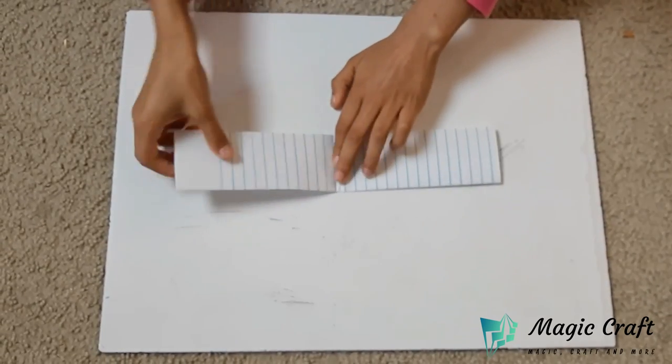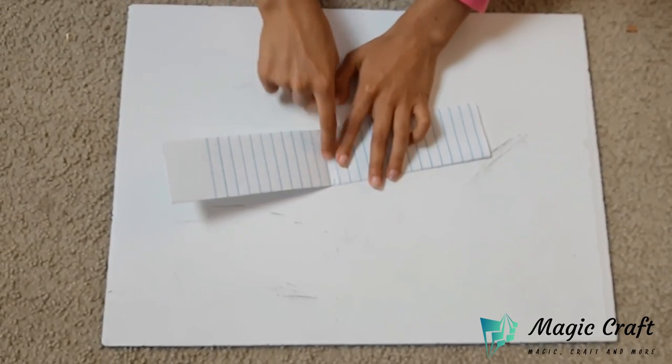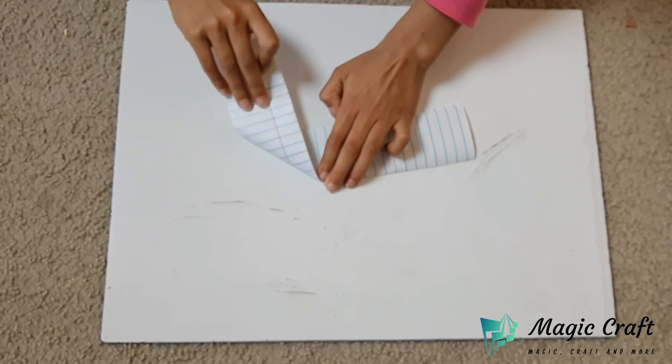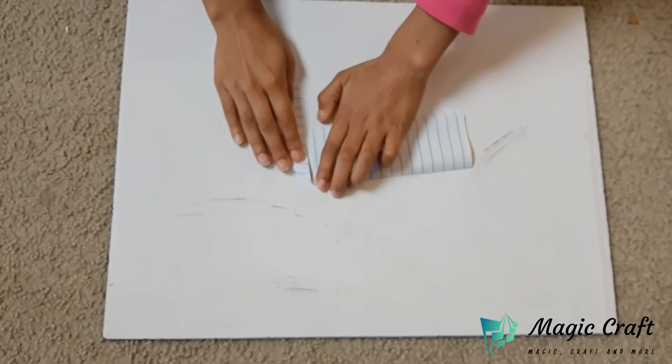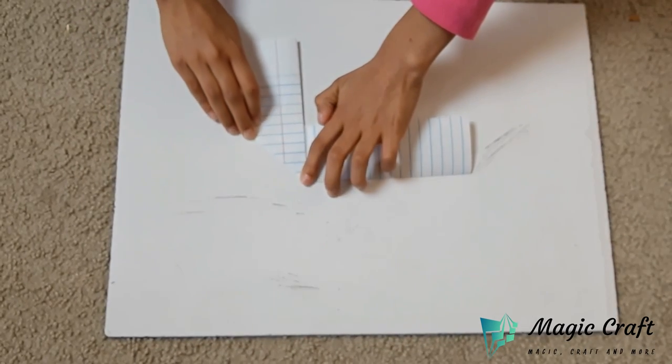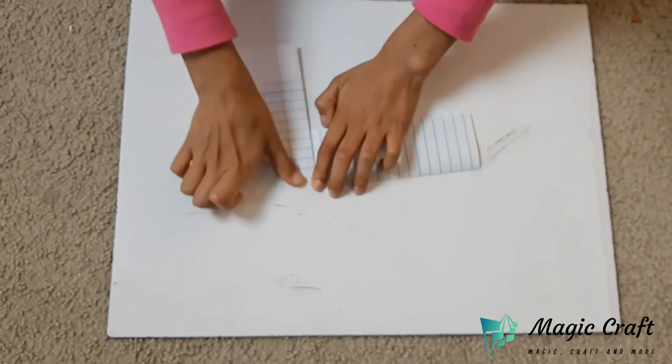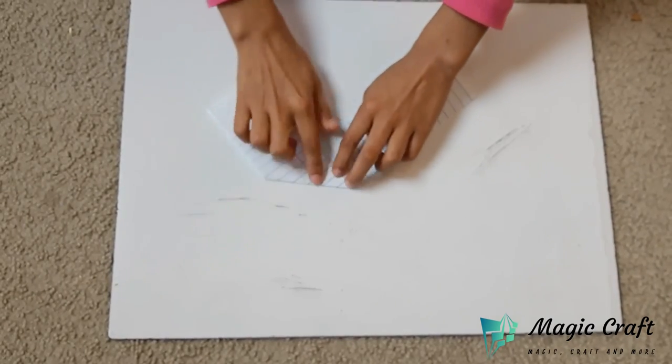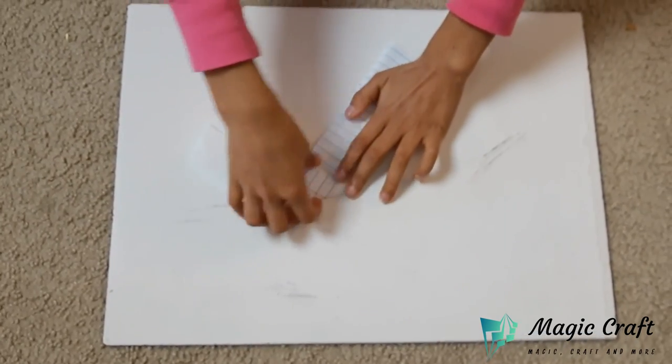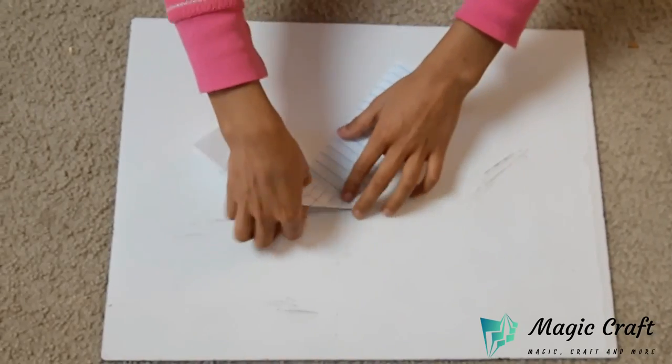Then open it back up and fold the edge to the crease you just made. Then fold it straight down.